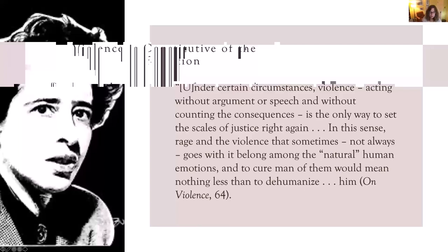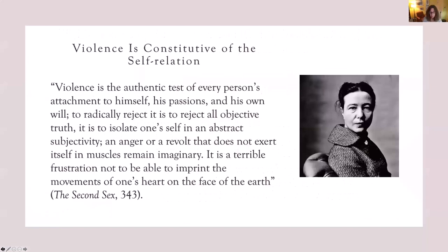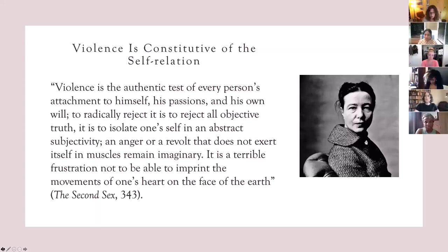This passage from Arendt's work interests me because Ami doesn't cite it in 'Violent Bodies.' Maybe she interpreted the passage differently, or perhaps it didn't catch her attention because she doesn't approach Arendt's work on violence through her remarks on rage. Still, it seems to me Ami must have noticed the similarities between this passage from 'On Violence' and the one from 'The Second Sex' that she does cite. I wonder why Beauvoir and not Arendt — and I wish I could ask her about this.